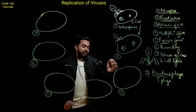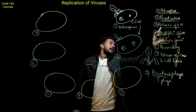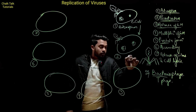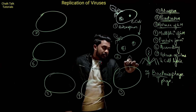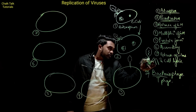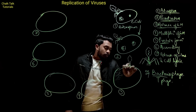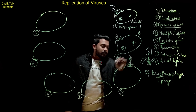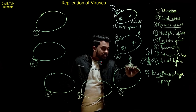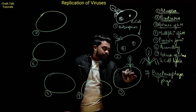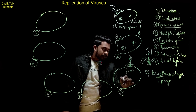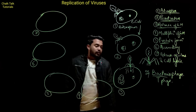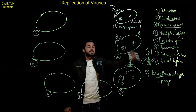यह ऐसा इसलिए करेगा क्योंकि third step है release of genetic material। यह जो E. coli के ऊपर आके चिपक गया था, इसमें जो tube-like structure है, उस tube-like structure के द्वारा अपना genetic material जो इसके head में present है, उसको cell के अंदर release कर देगा। यह हो गया third step — release of genetic material।